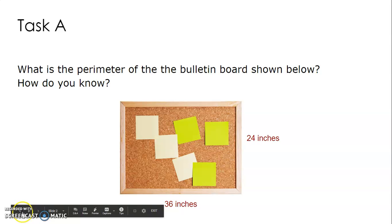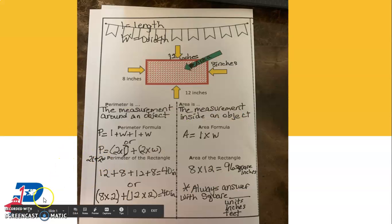You can multiply 8 times 2 plus 12 times 2. So I'm going to multiply 8 times 2 and I get 16, and then I'm going to multiply 12 times 2 and get 24. I add those two together and I get 40 inches.